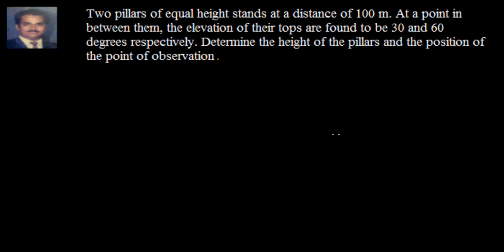Let's go ahead and do that. Two pillars of equal height, so I take two pillars, they both are of equal height. They stand at a distance of 100 meters, so I know this horizontal distance is equal to 100 meters. At a point in between them, we don't know the point, we have to find it out. Let us assume the point is here.